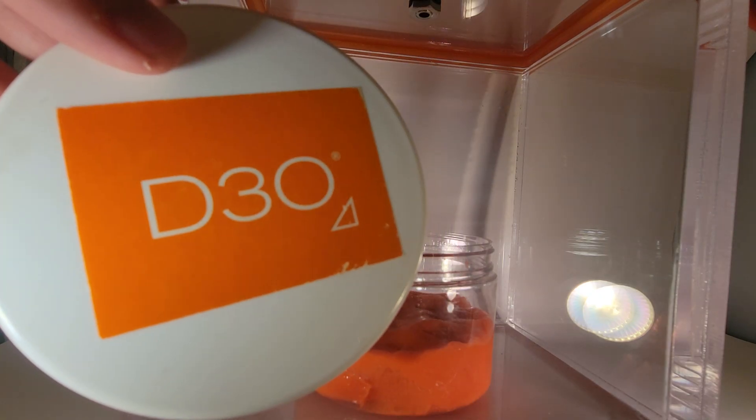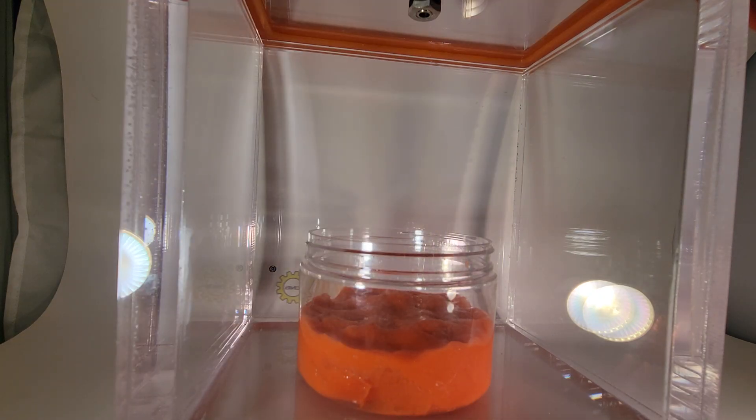It's called D3O and it's very similar to a non-Newtonian fluid, except this is more like a gel rather than a fluid, like a viscoelastic polymer type. It will settle into a flat shape, but it takes quite a while.